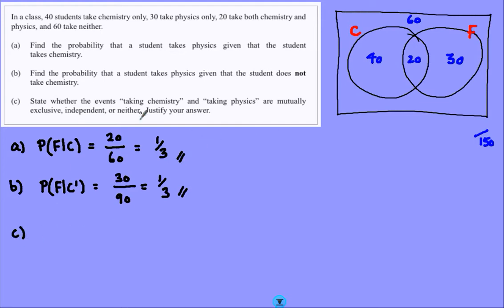Part C, two decisions to make: taking chemistry, taking physics. Mutually exclusive we're going to deal with first. This is an easy one if you've got Venn diagrams, very easy to see.